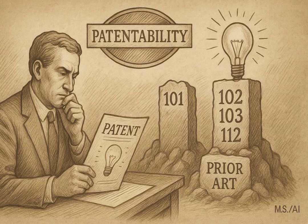Chapter 2100 is the examiner's guide for checking compliance with Title 35 of the U.S. Code. It walks them through assessing applications against those key sections: 101 for eligibility, 102 for novelty, 103 for non-obviousness, and 112 for the specification requirements. Let's start at the beginning — Section 101, subject matter eligibility. This is like the first hurdle. What makes something eligible?